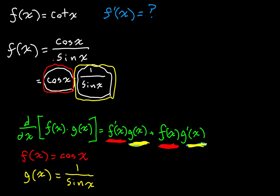Now we have to find out what f prime of x is. f prime of x — that's the derivative of cosine of x — that's just negative sine of x. It's pretty simple, right? Negative sine of x. But now what's the derivative of g of x?